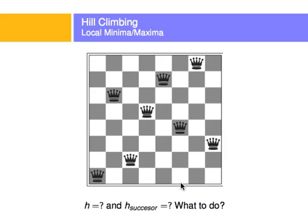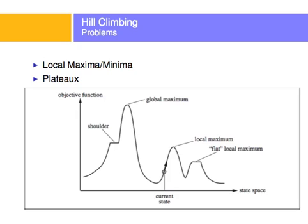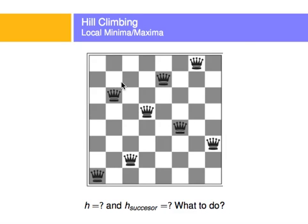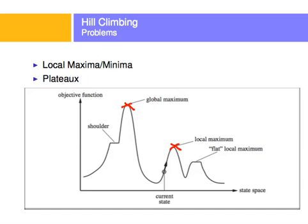If there are no successors with a lower heuristic than the current board, we've arrived at a local minimum — everything around us is higher, and we can't get out. There's no heuristic that will allow us to climb out into what would actually be the global minimum, which is where we want to go. In the next video, some algorithms will be explained to actually get out of these complicated states and continue solving the problem.